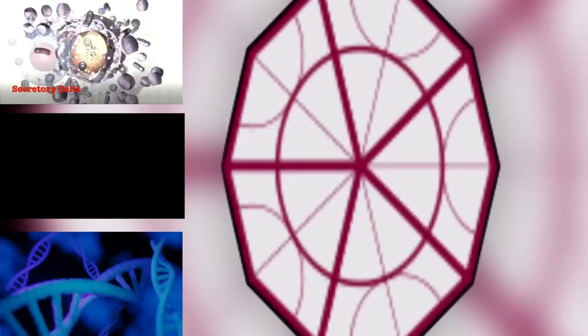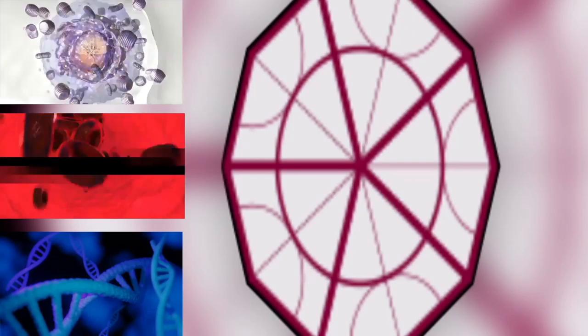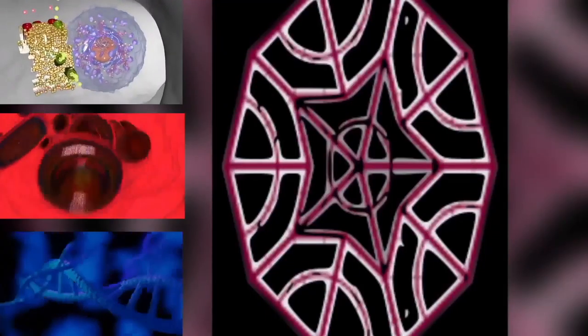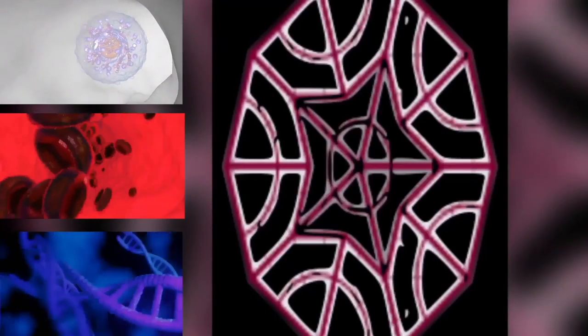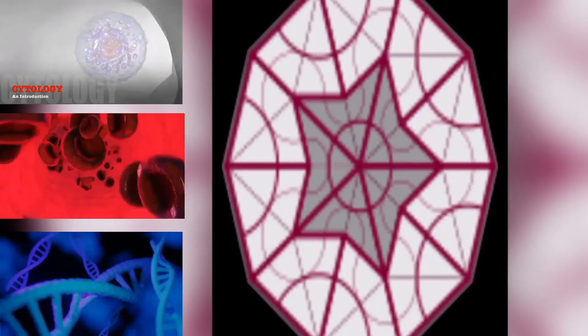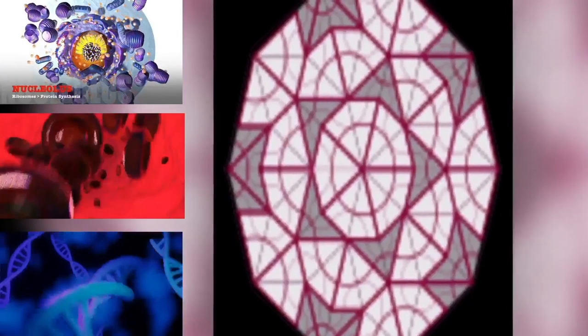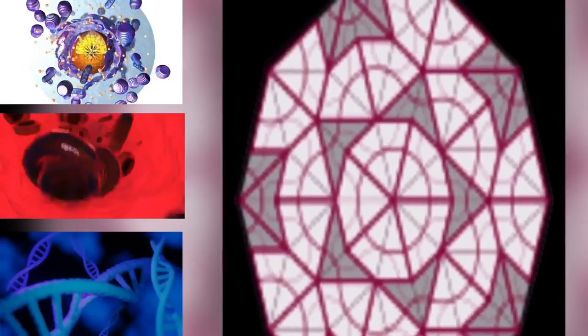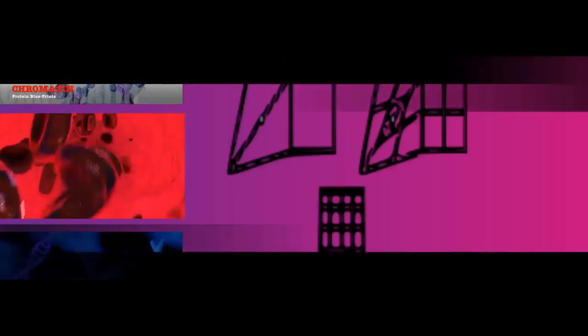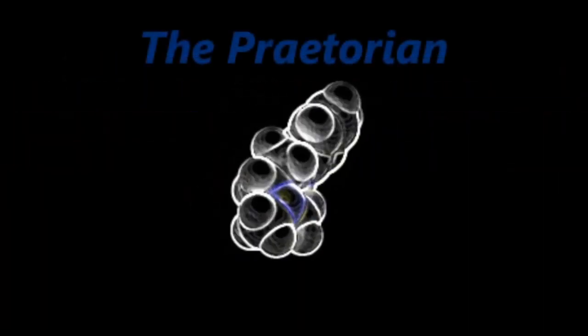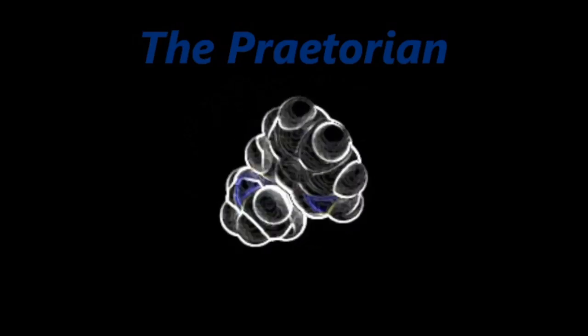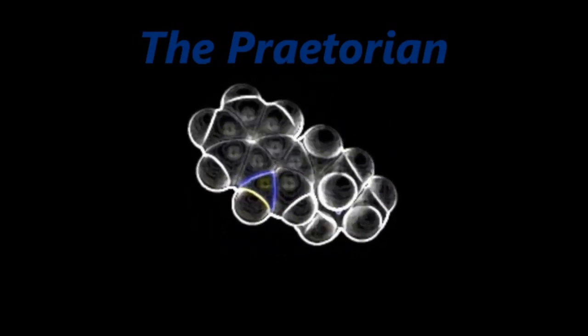Metaphase: the centrosomes have moved to the poles of the cell, and have established the mitotic spindle. The chromosomes have congressed at the metaphase plate. Anaphase: kinetochore microtubules pull the two sets of chromosomes apart, and lengthening polar microtubules push the halves of the dividing cell further apart, while chromosomes are condensed maximally. Telophase: reversal of prophase and prometaphase events, and thus completing the cell cycle.